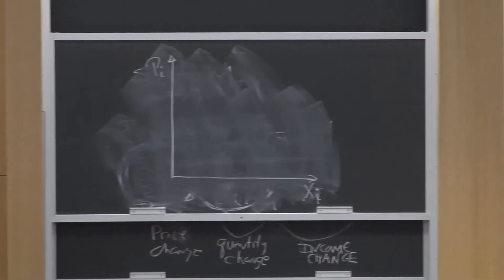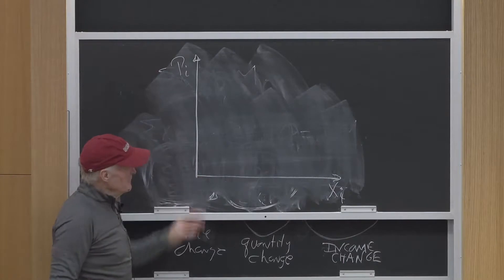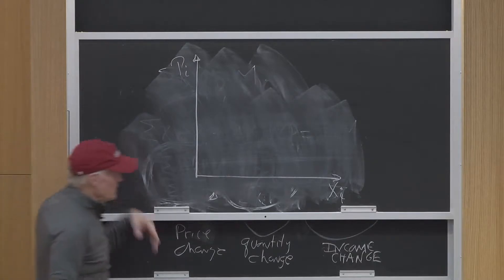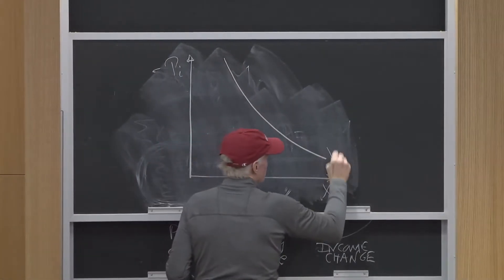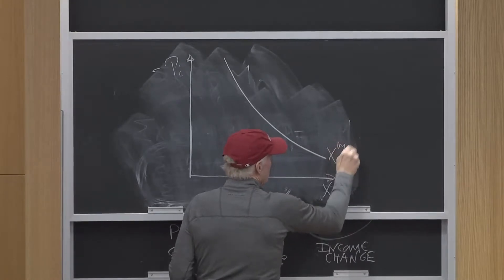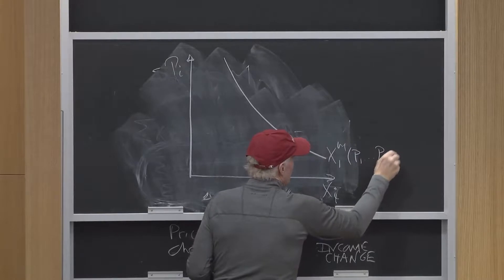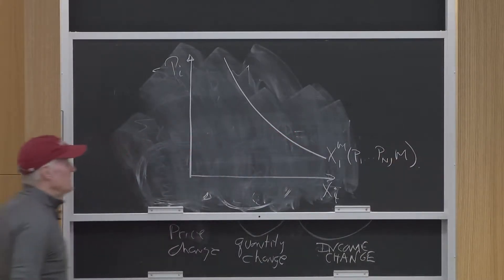All mathematicians hate us because somehow Alfred Marshall put the price up here. So we've done that for a long time. It's okay. So this is the demand curve, a relationship. This might be a Marshallian demand curve: X_I^M of P1 up to PN and M. That's a Marshallian demand curve.